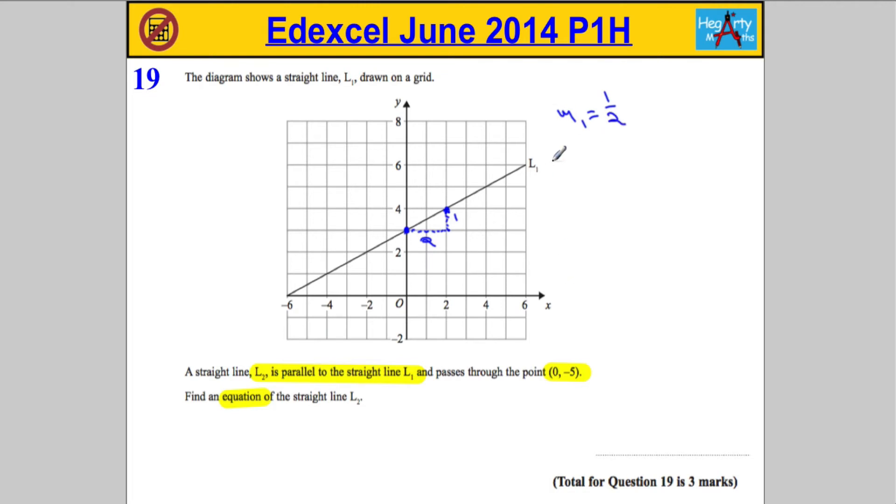Now, that means the gradient of L2 must also be a half, and that's purely because they're parallel. Parallel lines have identical gradients. So I know the gradient of L2, and I'm also told where it's going to cross the Y axis. So I also know the Y intercept. And you should know that most lines are in the form Y equals MX plus C.